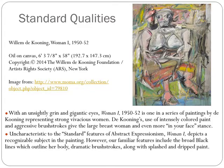With an unsightly grin and gigantic eyes, Woman One, from 1950 to 1952, is one in a series of paintings by de Kooning representing strong, vivacious women. De Kooning's use of intensely colored paint and aggressive brushstrokes give the large-breasted woman an even more in-your-face stance. Uncharacteristic of the standard features of Abstract Expressionism, Woman One depicts a recognizable subject in the painting. However, familiar features include the broad black lines which outline her body, dramatic brushstrokes, along with splashed and dripped paint.